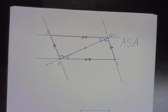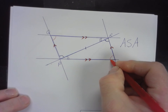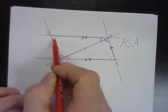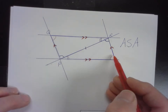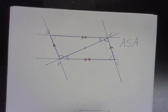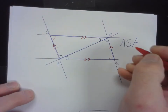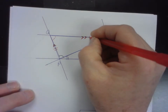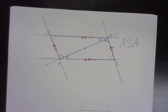We have angle-side-angle for those two triangles. If these two triangles are congruent by angle-side-angle, then all their corresponding parts are congruent. So this angle up here is congruent to that angle there — corresponding parts of congruent triangles. That gives us the opposite angles theorem: opposite angles in a parallelogram are always congruent. And those opposite sides are also corresponding parts of congruent triangles — that's the opposite sides theorem.